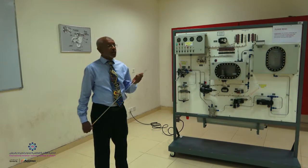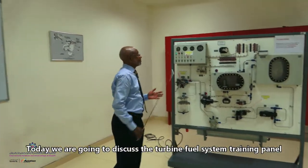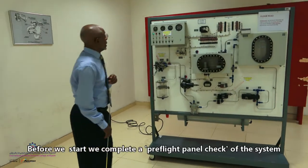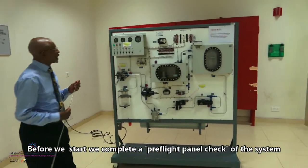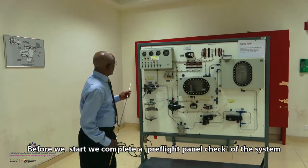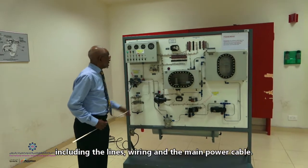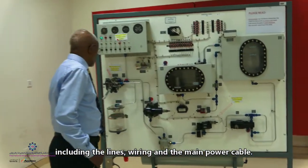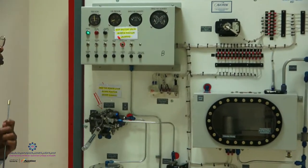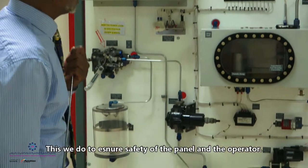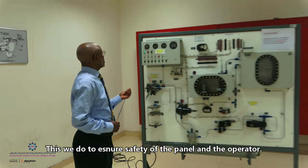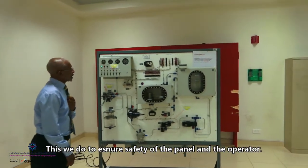So, today we are going to discuss the turbine fuel system training panel. As usual, before we start, we do a pre-flight check. We have to check all the components on the panel including the lines and the wiring and also the main power cable. This is to do an inspection to make sure everything is safe and then we'll start our check.